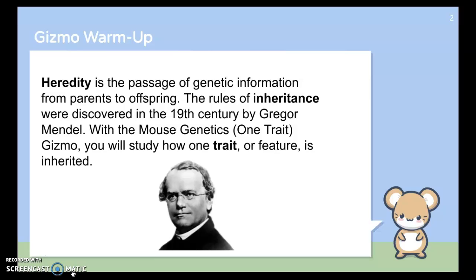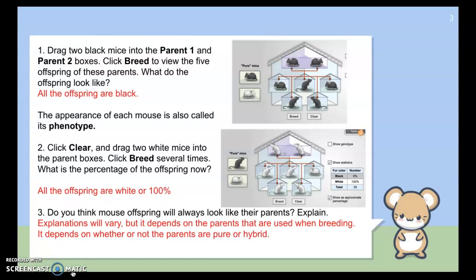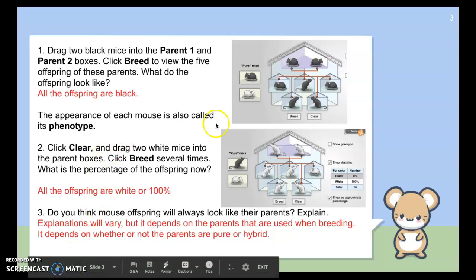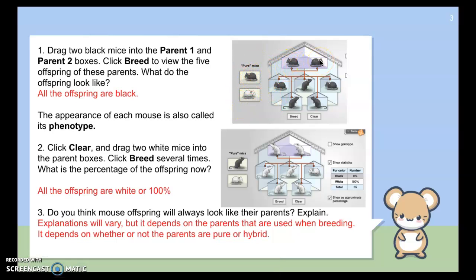And so our traits are inherited. They're passed on from our parents to our offspring. In this situation, the first thing they asked you to do was to take a look at what would happen if you crossed parents and had them produce different offspring. What would the results be? So in number one, they asked you to take, here were your parents to choose from, they asked you to take two black mice and then just breed them to see what their offspring would look like. And so the offspring were found down here. When you clicked that breed box, these mice started to pop up and they were all black. The appearance or how they look, remember, is called an organism's phenotype. And so it's their physical characteristic, how somebody would see them.